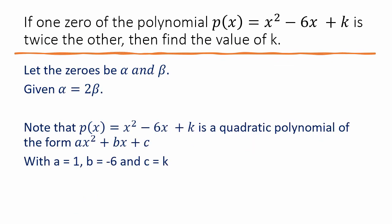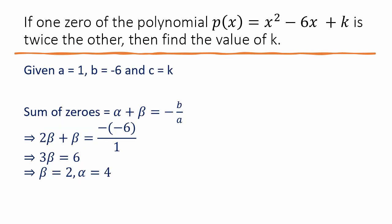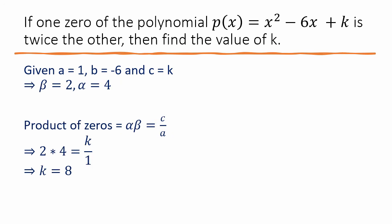Let us look at the problem again. We let the zeros be alpha and beta. We were given that alpha = 2·beta. The equation is of the quadratic type ax² + bx + c, with a, b, c values derived. Using the sum of zeros formula, we get alpha and beta. Then using the product of zeros equation, we find the value of k.